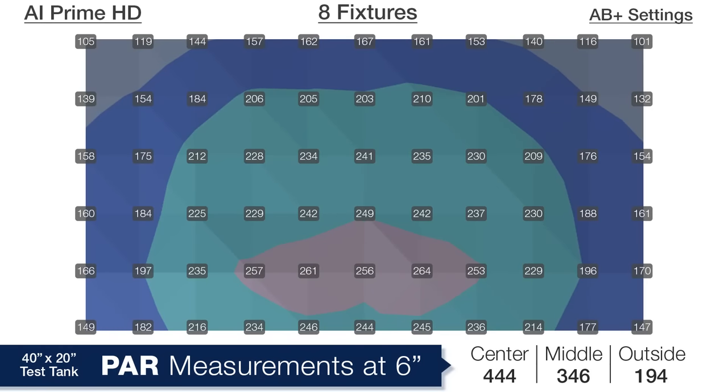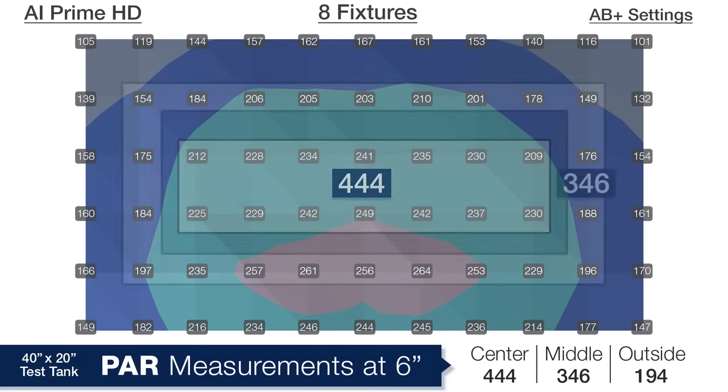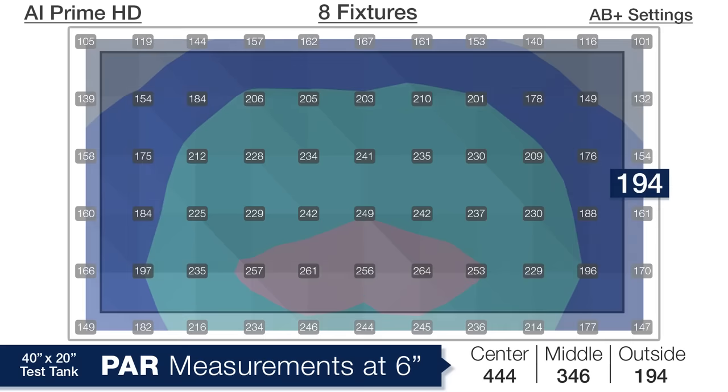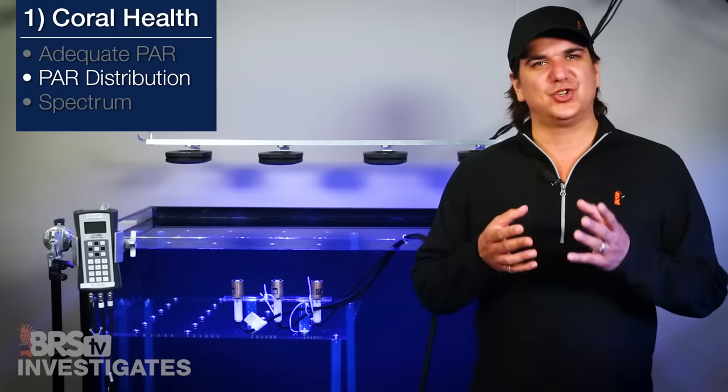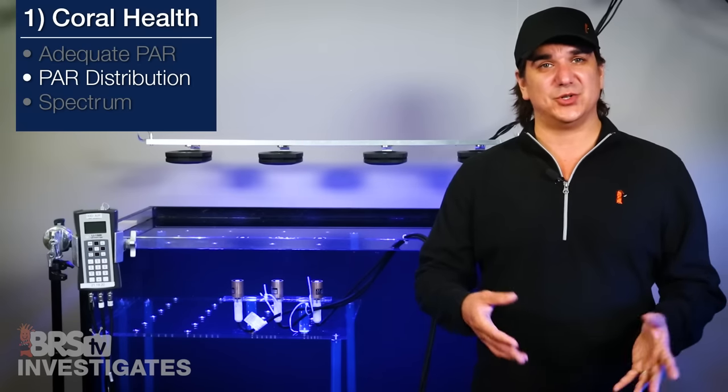Starting at a depth of six inches it is pretty easy to see the distribution of light is much smoother with 444 in the center, 346 in the middle ring, and 194 in the outer edges. This is difficult to achieve at this height in the tank and a direct result of spreading the light sources out further.